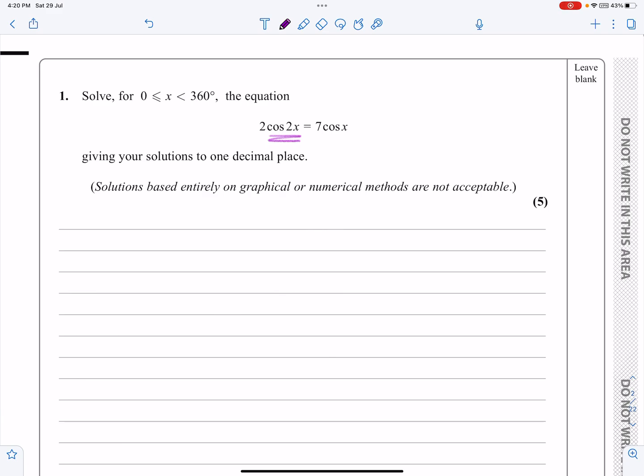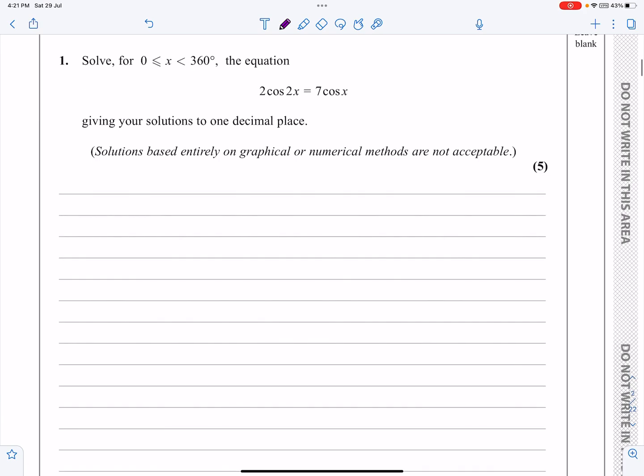Let's have a look at it then. So it says solve for x being between 0 and 360 degrees. That'll come in at the end. The equation 2 cos 2x equals 7 cos x.